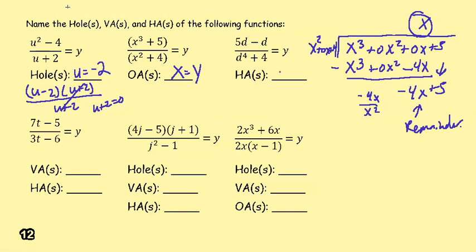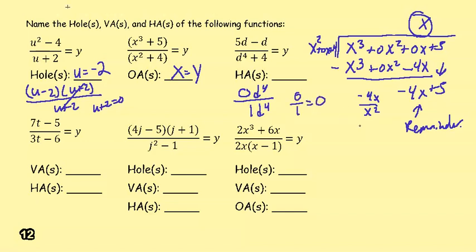For y = (5d - d) / (d⁴ + 4), we compare degrees. The leading term in the numerator has degree 0 in the fourth-degree sense, so we place 0d⁴ up top and 1d⁴ in the denominator. Zero divided by 1 is 0, so we have a horizontal asymptote at y = 0.